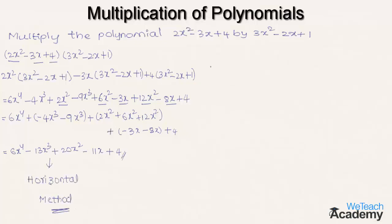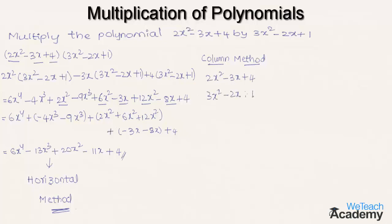Now let me explain how to multiply the polynomials using the column method with the same example. We consider the polynomials 2x² minus 3x plus 4 and 3x² minus 2x plus 1.